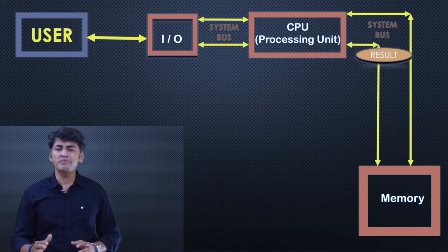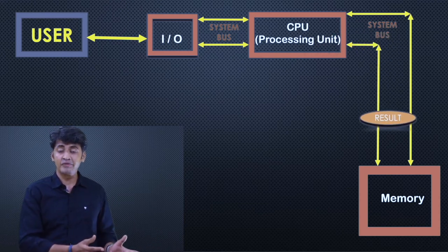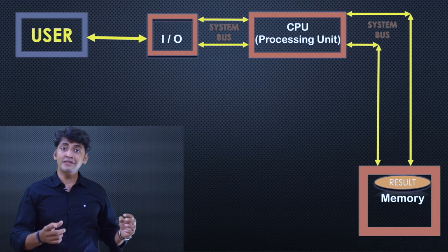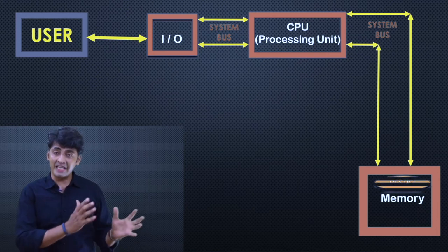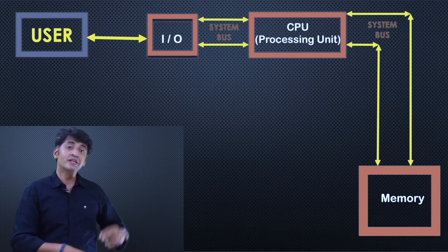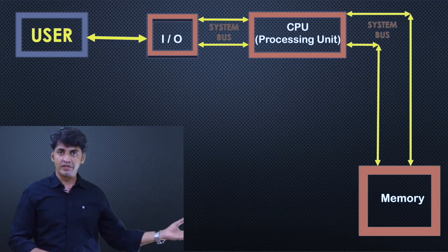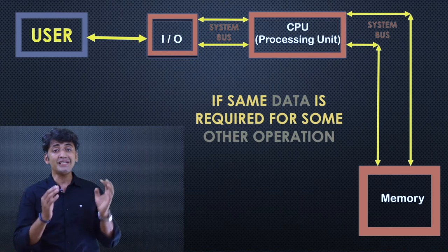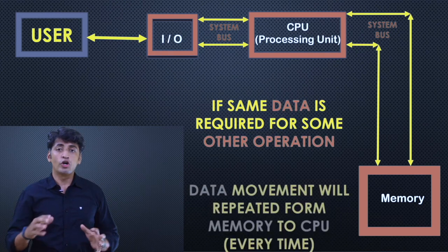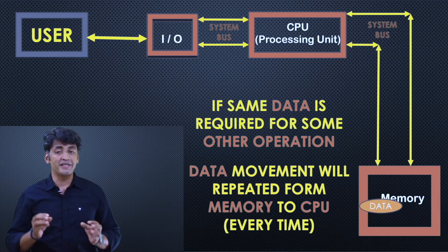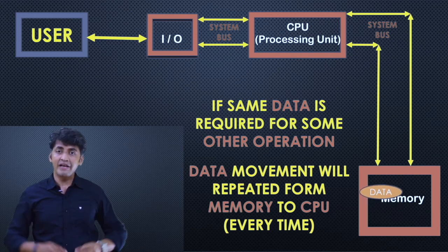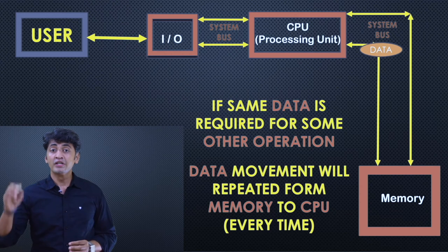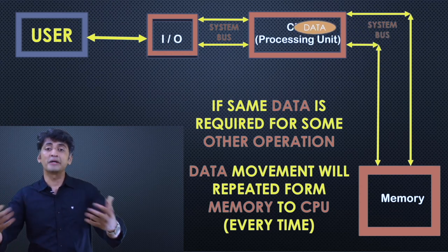For example, if the user wants to perform some other operation with the same set of data, again the data will be taken from the memory to the processor whenever it is required. If the same set of data is required 10 times, 10 times the data will be taken from the memory to the processor. The data transfer from memory to the processor takes some time — it may be a microsecond or a millisecond — and that particular time is considered as the data transfer time.